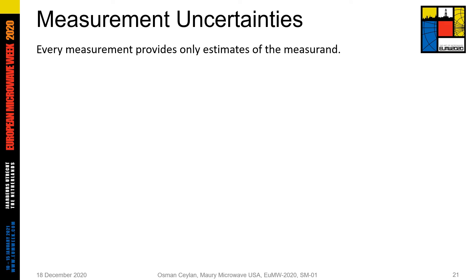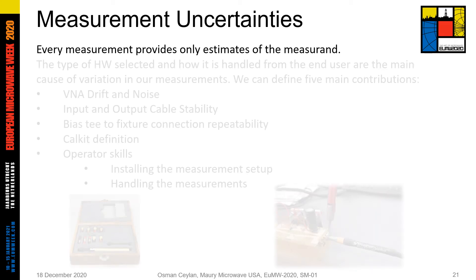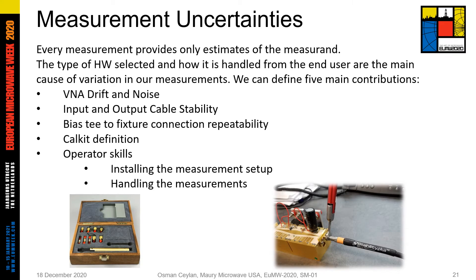Every measurement provides only estimates of the true value. We cannot have perfect and certain measurement data — there is always some uncertainty in all types of measurements, including RF measurements. In an S-parameter measurement system, there are five uncertainty contributions: VNA drift and noise, cable stability and reliability, connector repeatability of all components in the measurement system, calibration kit definition, and operator skills. Measurement uncertainty is a very important technical topic to understand the real performance of the DUT and the limits of the measurement setup. A characterized measurement setup can provide uncertainty information.